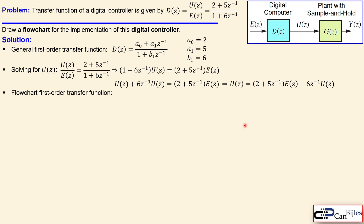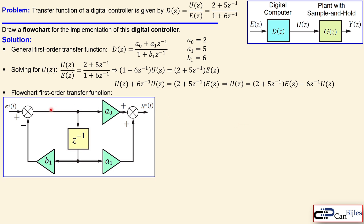The flowchart of a first order transfer function can be given in general by this diagram. This is one option — it is not the only available form. We see E*(t), the sampled error signal in the time domain, which corresponds to E(z) in the z-domain. There are gain blocks shown as triangles, a delay block z to the power minus 1, two summations, and additional gain blocks. To get the correct flowchart, you look at the first order model and pick your a1, a0, and b1, then substitute them in.